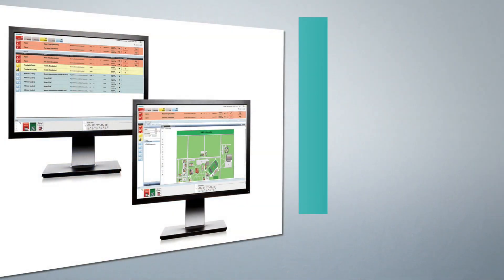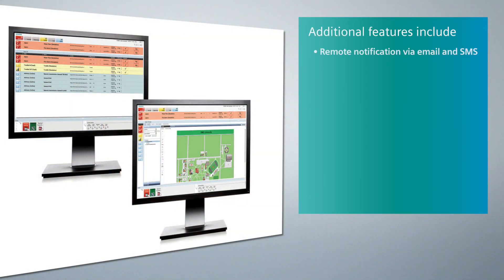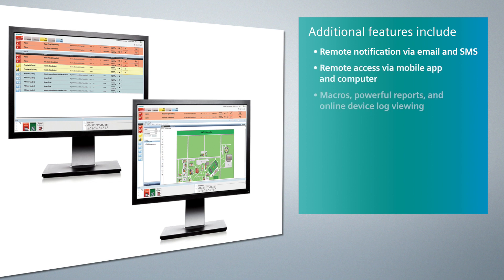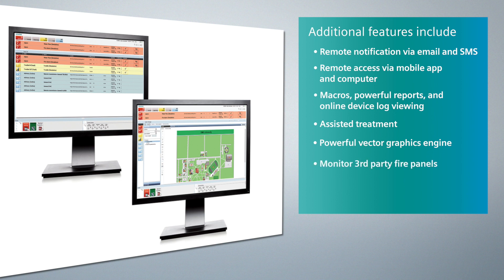Additional features included with both Dezigo CC Compact and Dezigo CC are remote notification via email and SMS, remote access via mobile app and computer, macros, powerful reports, and online device log viewing, assisted treatment to guide inexperienced operators through the treatment of an event, powerful vector graphics engine for visual representation and navigation of your site, monitor third-party fire panels, and the ability to share information in Dezigo CC with third-party systems via OPC.